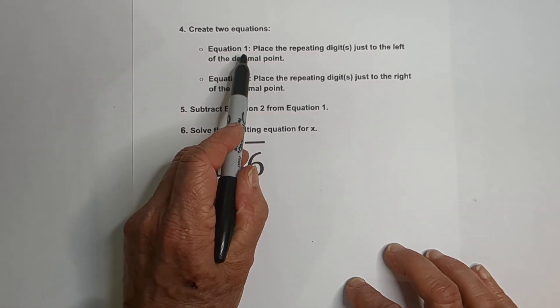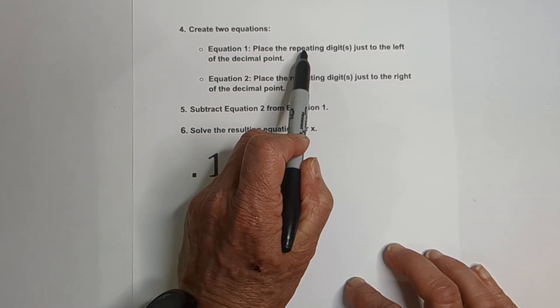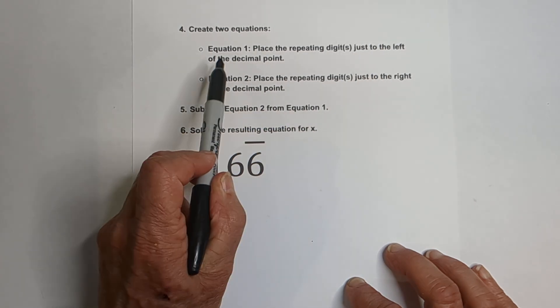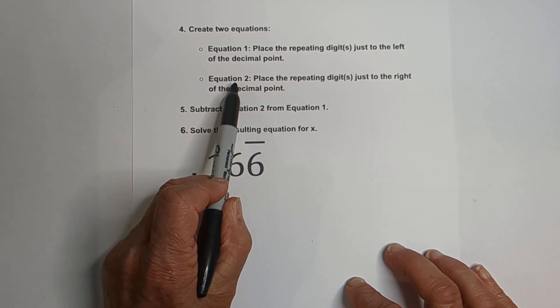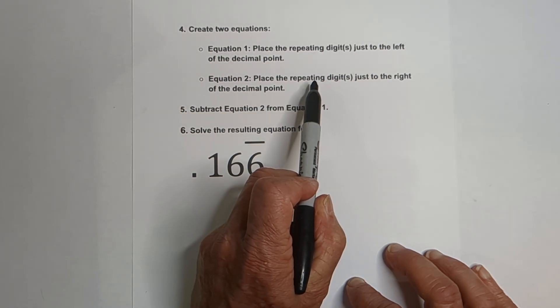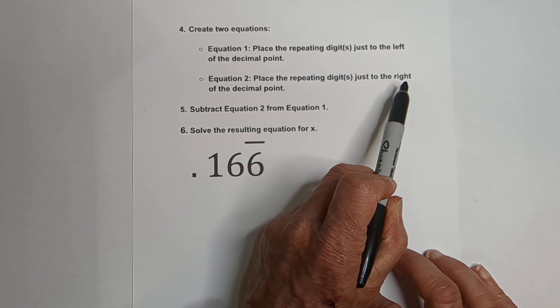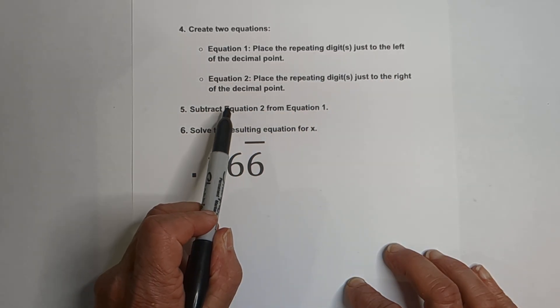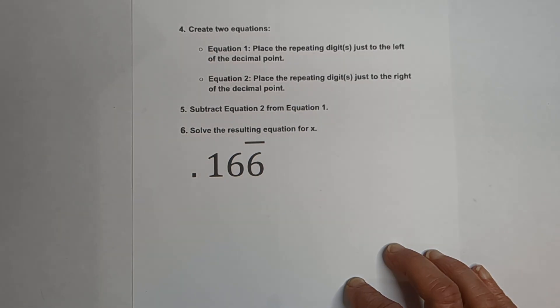We're going to set up two equations. Equation 1, we're going to place the repeating digit just to the left of the decimal point. Equation 2, we're going to place the repeating decimal just to the right. We're going to subtract Equation 2 from Equation 1 and then we're going to solve for x.